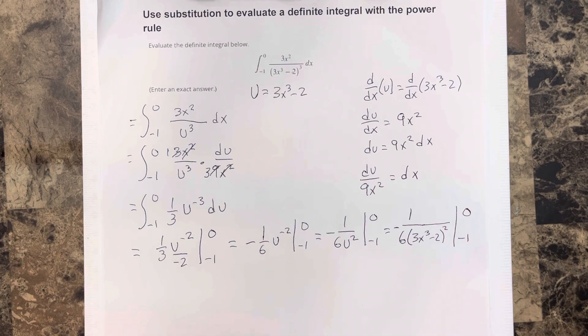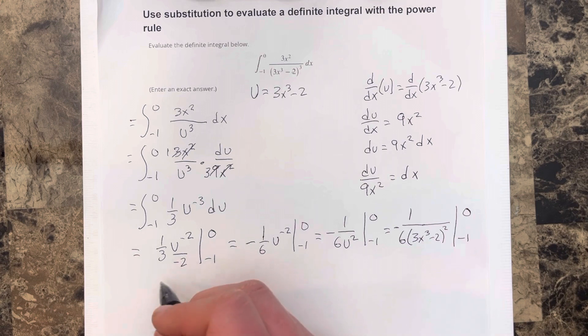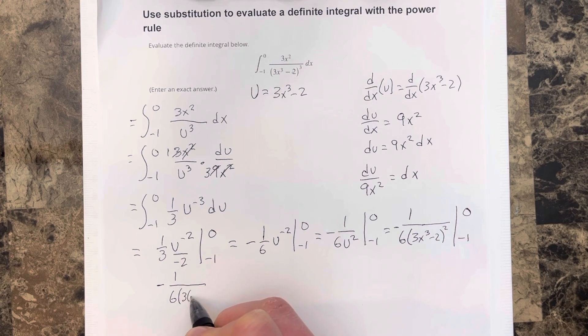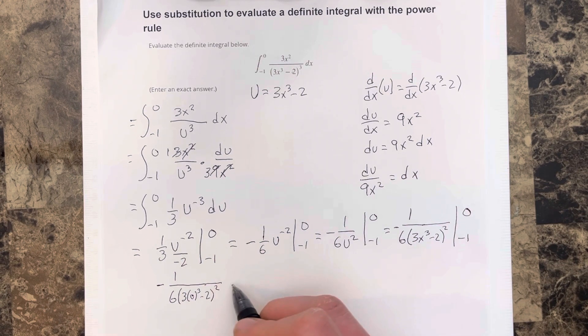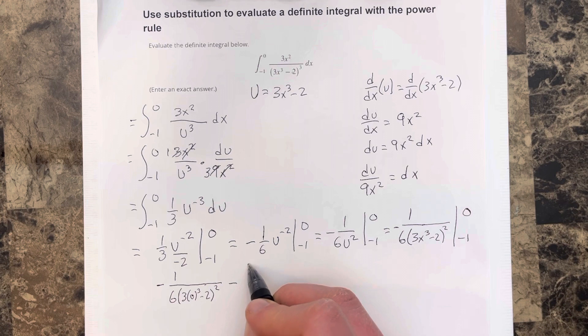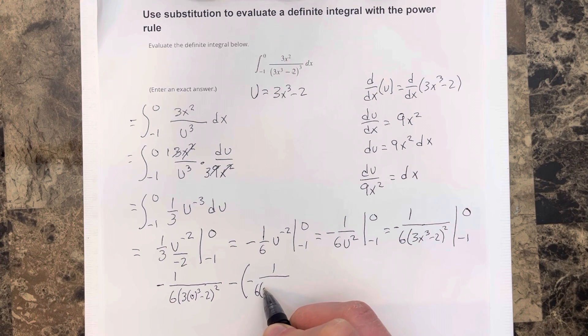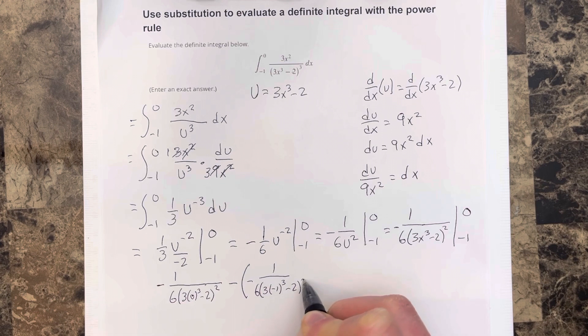So when I do the evaluation, 0 gets plugged in first. So I get negative 1 over 6, we'll get 3 times 0 cubed minus 2 squared. And then we're going to subtract negative 1 over 6 times. It would be 3 times negative 1 cubed minus 2 squared.